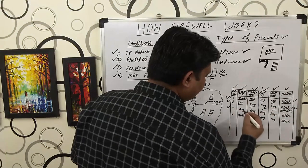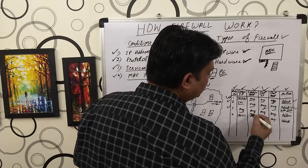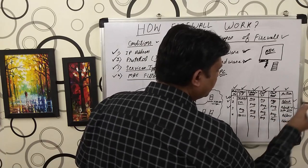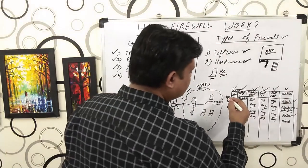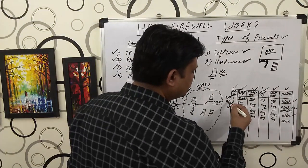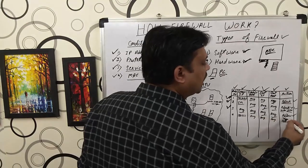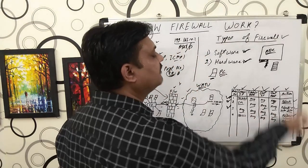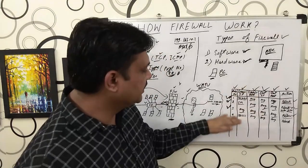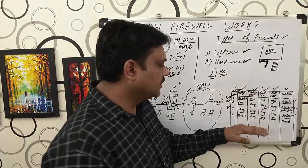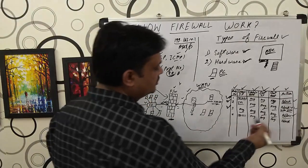So what you have to do is add one permit/allow condition at the end: source IP any, source port any, destination IP any, destination port any, action: allow. This means if condition 1 doesn't match, it checks condition 2; if condition 2 doesn't match, it reaches condition 3 which says allow — so the firewall allows that traffic into the local area network. Now you have configured three conditions so far.